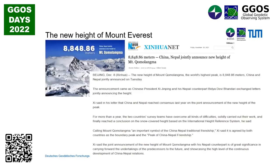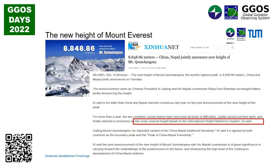To conclude, I would like to mention that a new height for Mount Everest was published at the end of 2020. In the newspaper article, it is explicitly mentioned that the new height of Mount Everest is referred to the International Height Reference System — which is a nice advertisement. When we have to talk about the height reference system, we mention the new height of Mount Everest. That's all. Thank you.